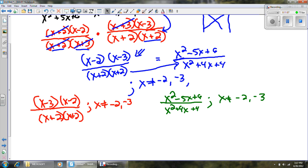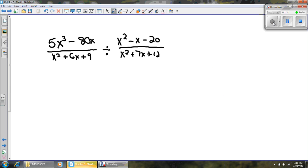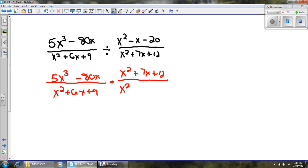Let's try another one here. Hold on one second. Let me get situated. Take a look at this situation. I've got 5x³ - 80x over x² + 6x + 9. And I'm dividing that by x² - x - 20 over x² + 7x + 12. Now, it's division. I know that dividing by a fraction is the same as multiplying by the reciprocal. So I'm going to rewrite this as 5x³ - 80x over x² + 6x + 9. And I'm going to multiply that by the reciprocal of the original fraction. x² + 7x + 12 over x² - x - 20.